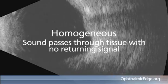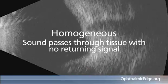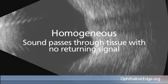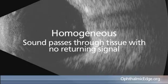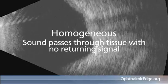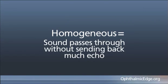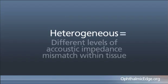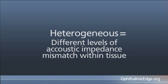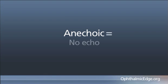The septic tissue and fat send back signals every time sound interfaces with them, and you will see basically a white background in orbital fat with high reflectivity. So homogeneous means the sound is passing through without sending back much echo, and heterogeneous means there are different levels of acoustic impedance mismatch within that tissue. The next word is anechoic, which simply means no echo.